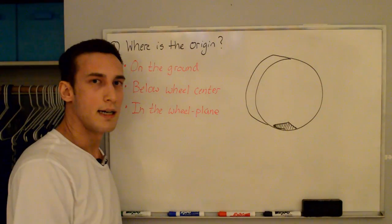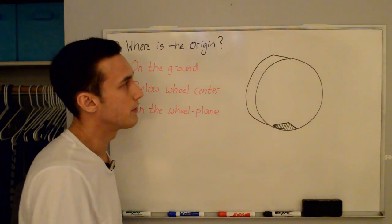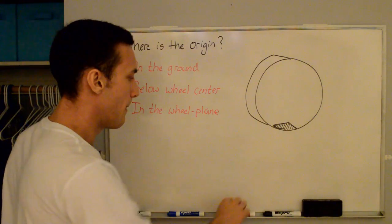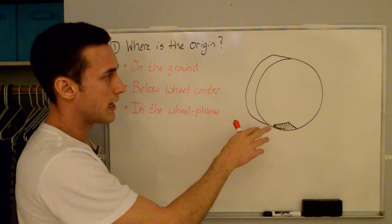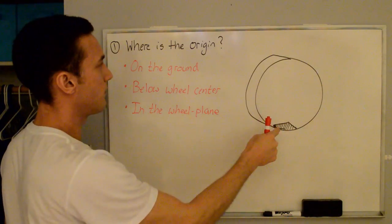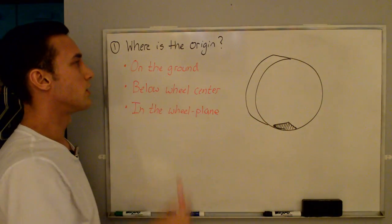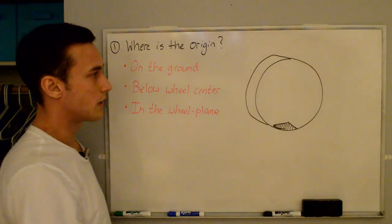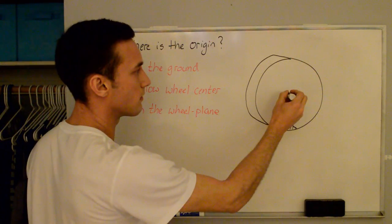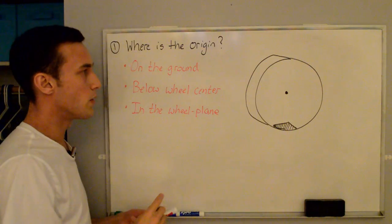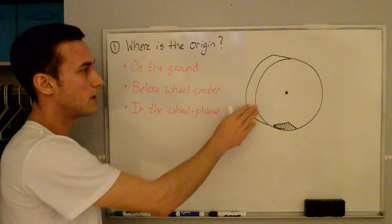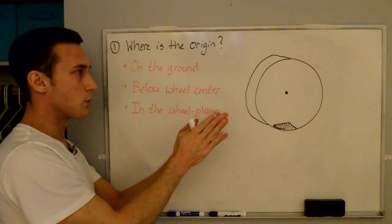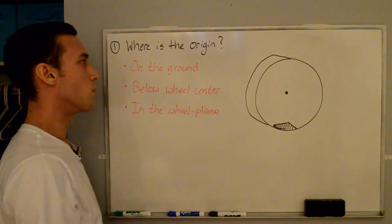So let's get started with the origin. I've drawn a tire here, and we're going to draw the origin and the coordinate axes on this figure. The origin is located on the ground, below the wheel center. The wheel center is in the center of the wheel, and the origin is in the wheel plane. You can imagine if you take this wheel and squish it down into a single plane, that's the wheel plane — it sits in the center of the left and the right of the wheel.